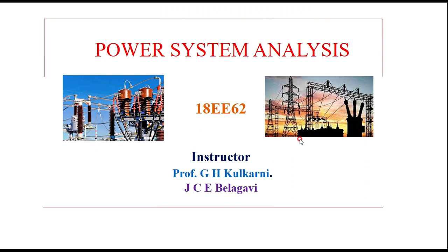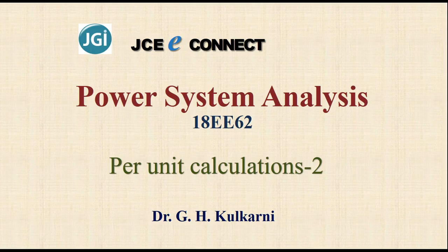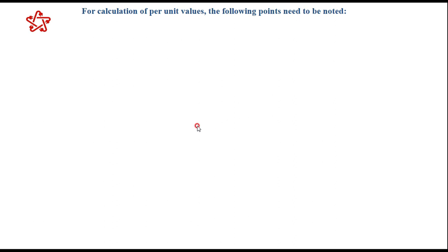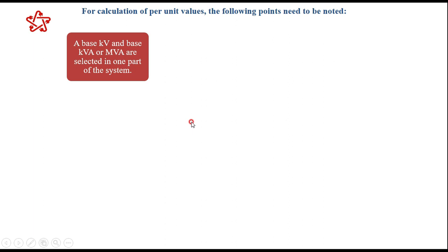Continuing with per-unit calculations of the power system. In the last session we have seen how per-unit calculations are carried out step by step. The first step is to choose the base kilovolts and base MVA in any one part of the circuit. Depending upon the capacity of the power system component, you can choose MVA or KVA as base.